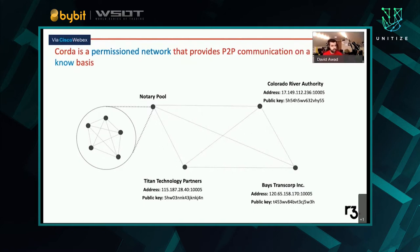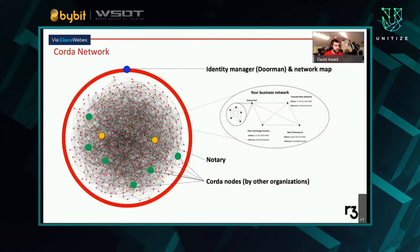Just to put this into context, our network here between Titan Technology, BASE, TransCorp, and Colorado River Authority is a subset of the many other Corda nodes across the internet working to track all kinds of different assets. You can find out different parties that are using this by looking into the Corda Network Foundation and finding out which parties are using Corda to track their assets and run notaries to mediate their transactions.